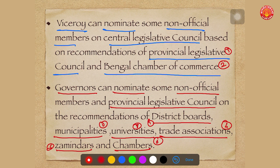So here two things are very clear: the Viceroy had the right to nominate non-official members to the Central Legislative Council, and governors had the right to nominate non-official members to the Provincial Legislative Council. This system of nomination widened the representation in legislative councils, gave more voice to various stakeholders involved in making and implementing laws, and increased the participatory nature of historical development in India.